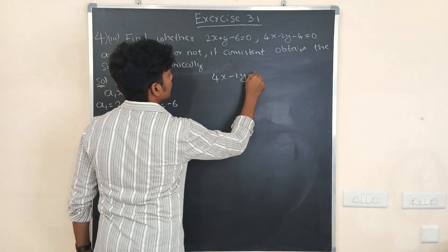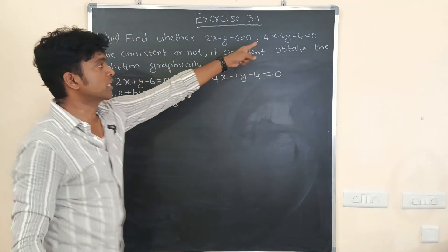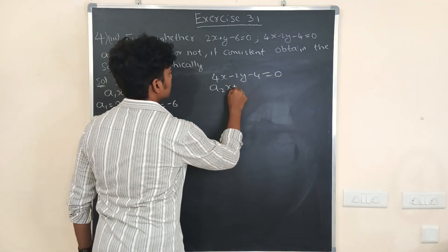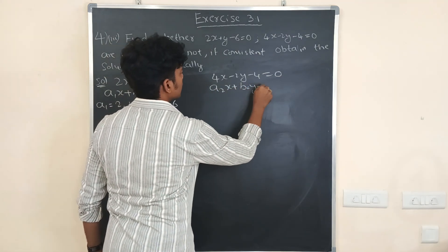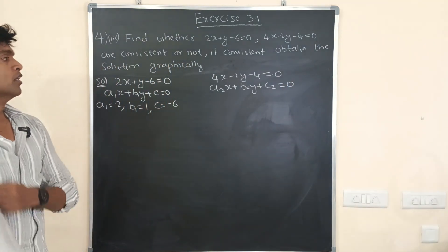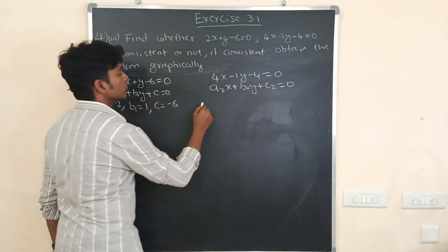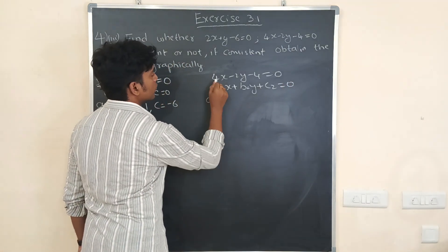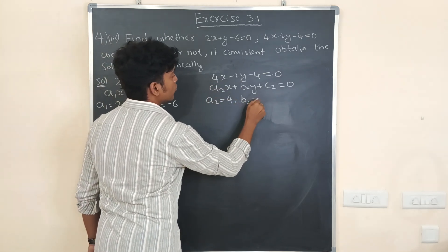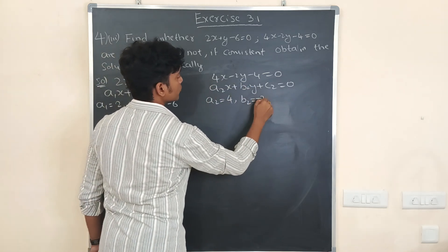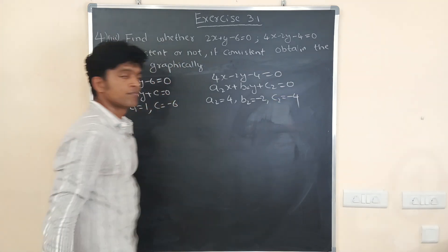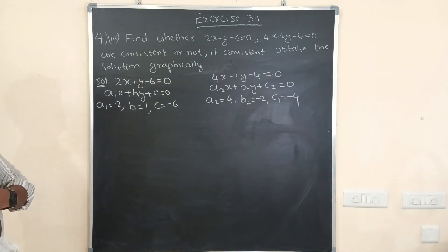The second equation is 4x - 2y - 4 = 0. Again, comparing with a2x + b2y + c2 = 0: a2 is equal to the coefficient of x, that is 4; b2 is equal to the coefficient of y, that is minus 2; and c2 is equal to the constant, that is minus 4.